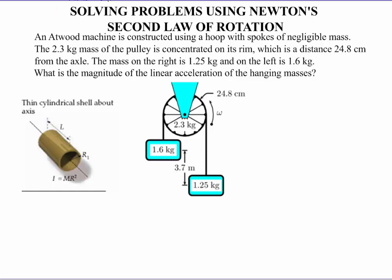This is Dr. Holt. In this problem, I'm going to be using Newton's second law of rotation. Here I have an Atwood machine constructed using a hoop with spokes that have negligible mass. The 2.3 kg mass of the pulley is concentrated on its rims, so what we really have is a thin cylindrical shell at a distance of 24.8 cm from the axle — so the radius is 0.248 m.